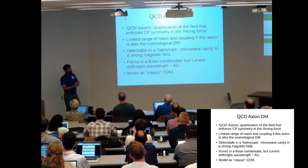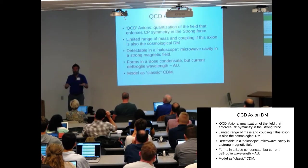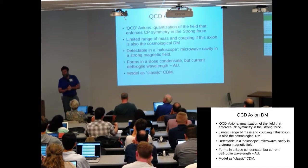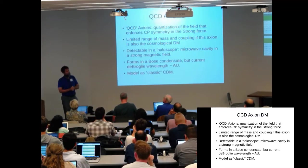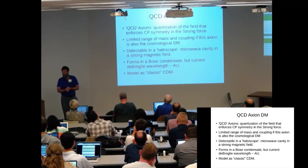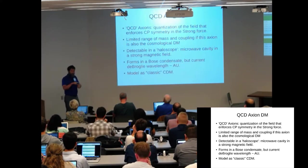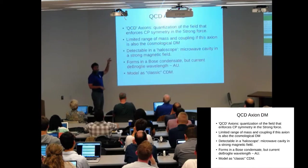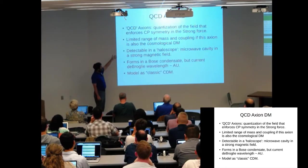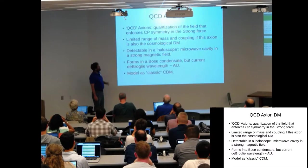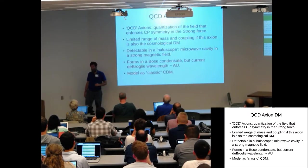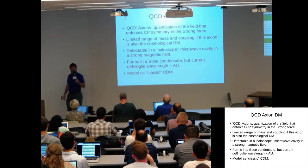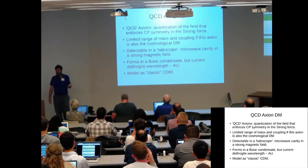proposed that there was this field that enforced this symmetry dynamically. The quantization of that field is called the axion. It turns out that with the appropriate range of mass and coupling to photons, this axion could also be the cosmological dark matter. So this is wonderful - one particle, we solve two problems.